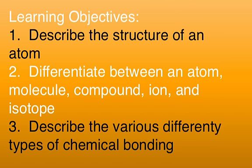Learning objectives are: 1. Describe the structure of an atom. 2. Differentiate among an atom, a molecule, compound, ion, and isotope. 3. Describe the various types of chemical bonding.